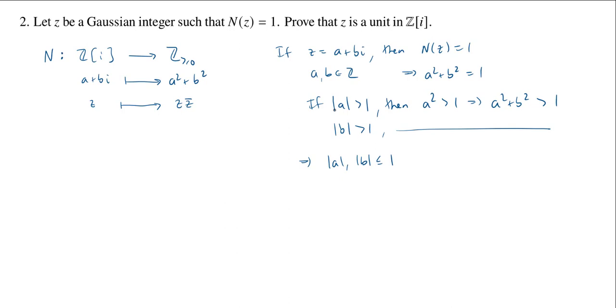So what are the possibilities? If a and b are integers and they have absolute value less than or equal to 1, this implies that a and b have to be either 0, 1, or minus 1.